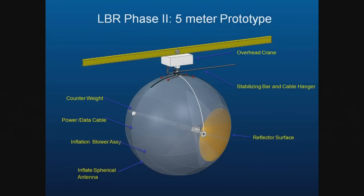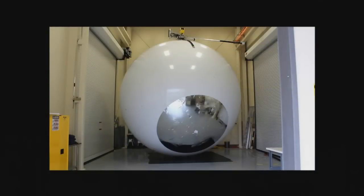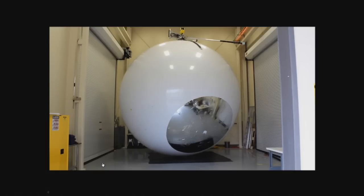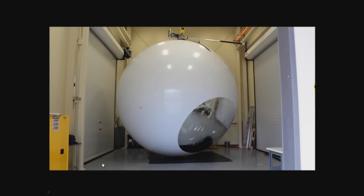Now we're in NIAC Phase 2. We're making a five-meter diameter sphere — we can afford it at five meters, and it fits within the available high-bay hangar at the Southwest Research Institute. It has internal dielectric curtains to help maintain a spherical shape under differential pressure, and it hangs from an overhead crane for testing. Here's a picture — it's undergoing tests now at Southwest Research Institute. We can see it turning in azimuth and moving in elevation.